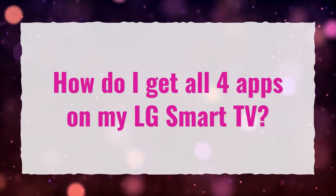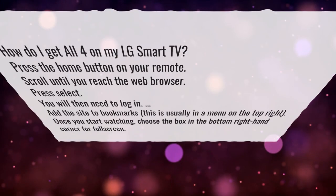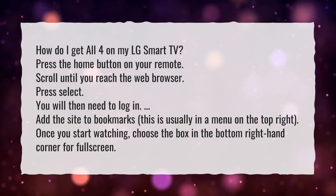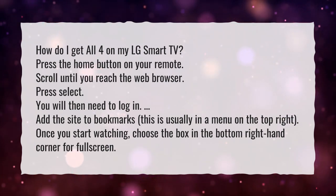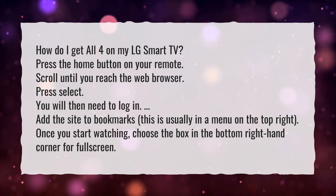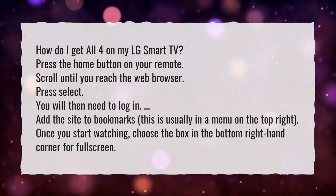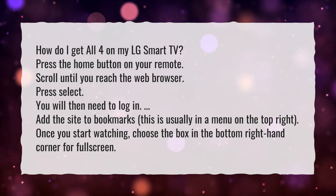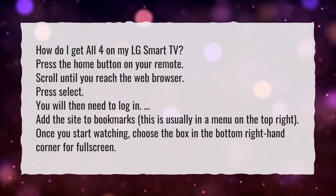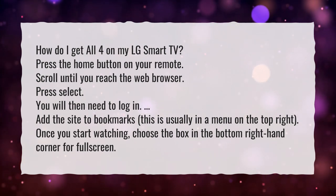How do I get all four apps on my LG Smart TV? Press the Home button on your remote. Scroll until you reach the web browser and press Select. You will then need to log in. Add the site to bookmarks — this is usually in a menu on the top right. Once you start watching, choose the box in the bottom right-hand corner for fullscreen.